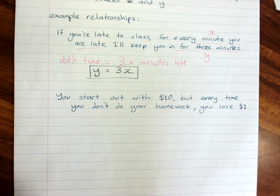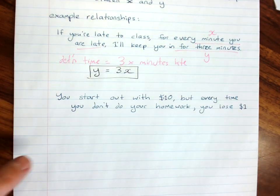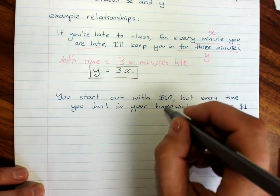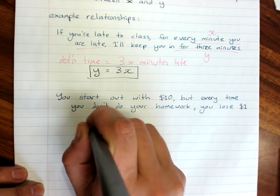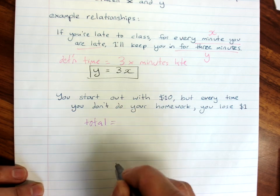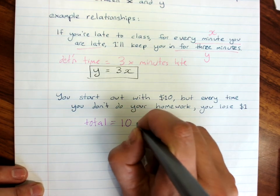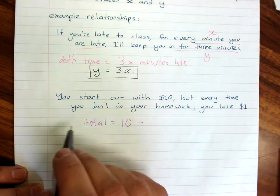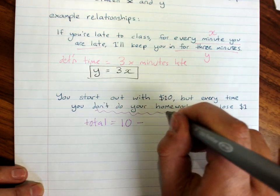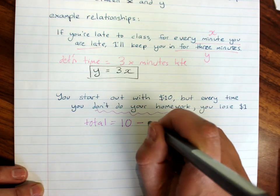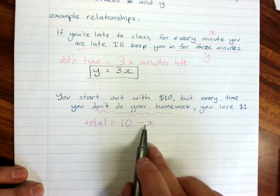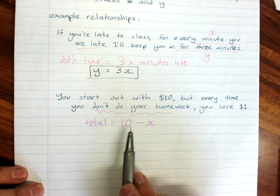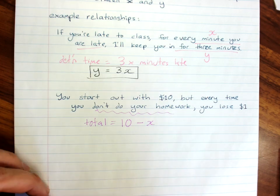What if you started out with $10, but every time you don't do your homework, you'll lose a dollar? How much I've got, well, that's $10 minus 1 for every time I don't do my homework. And if every time I don't do my homework is an x,